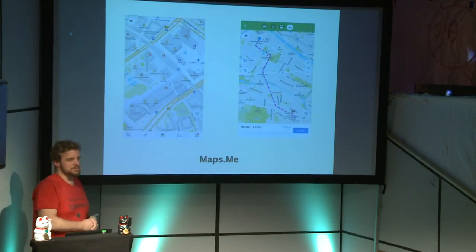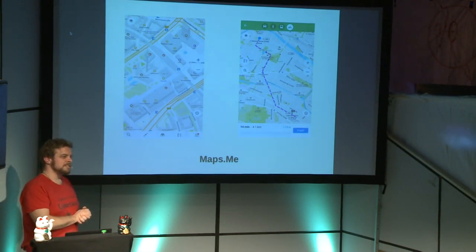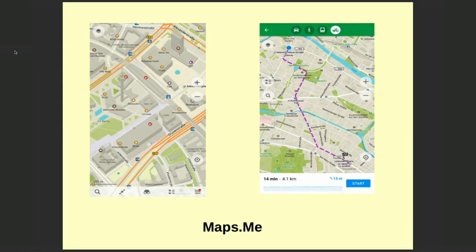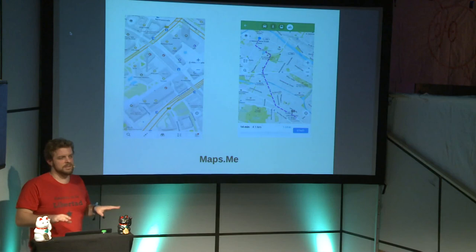OsmAnd is the best app I know, but it's very complex. Some people might prefer a nicer visual version — that's where Maps.me comes in. Both apps are also available in other stores, and sometimes they cost money there; in F-Droid they are always free at no cost with no account required. As you can see, Maps.me has a very nice visualization of buildings, and if you like walking around a city it may be the best choice. It also has navigation available, but it's way simpler than OsmAnd.